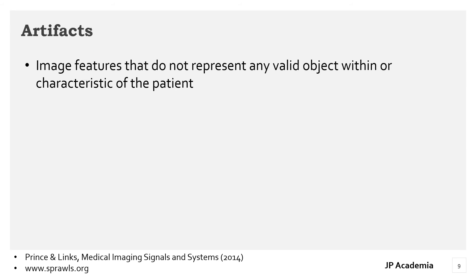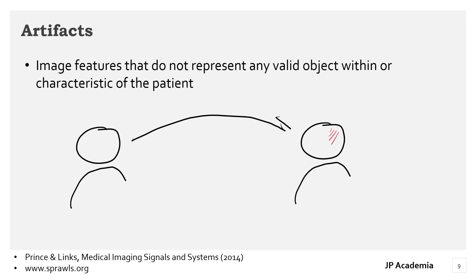Another problem is that most imaging methods can create image features that do not represent a body structure or object. For example, after doing the imaging process, you may see something in part of your image which is not necessarily part of the object — these are image artifacts. The problem is they can obscure a part of an image or may be interpreted as an anatomical feature when they are not.